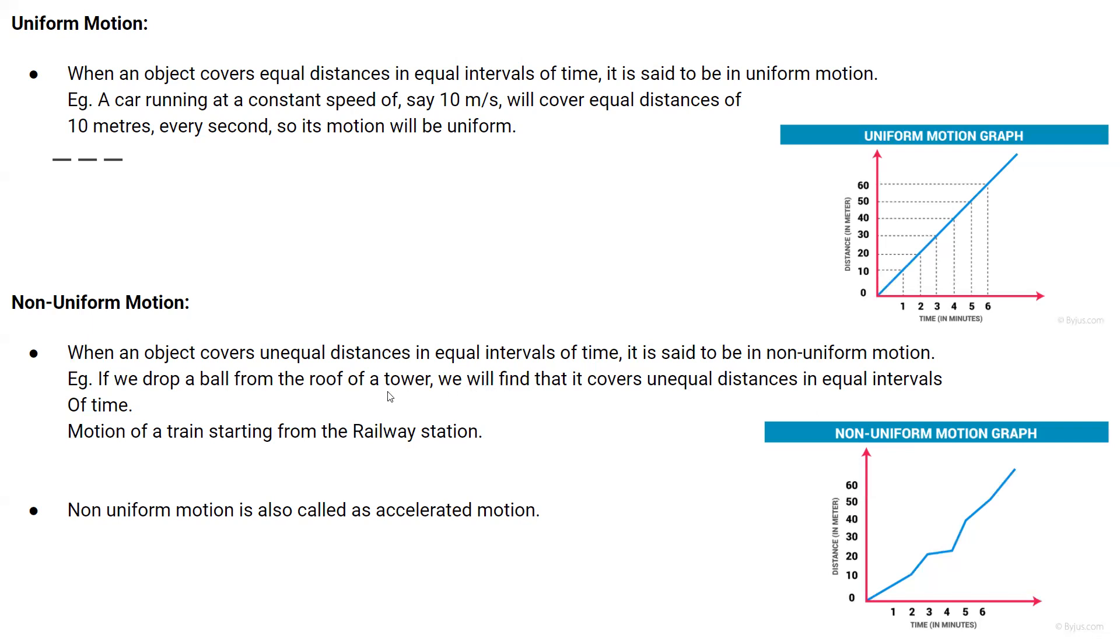One example is that if we drop an object from a tower or building, then it will cover unequal distances in equal intervals of time. And every second, the speed or distance will increase.